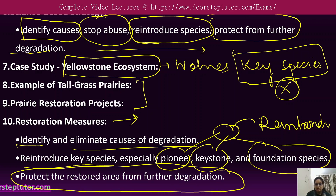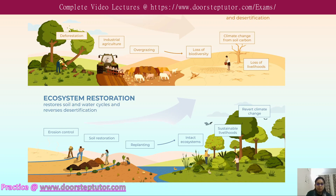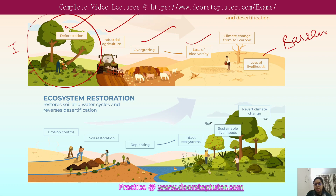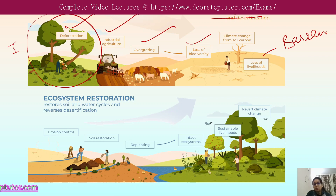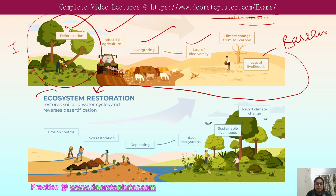As shown in the diagram, a large green ecosystem exists initially. Through deforestation, industrial activity, and overgrazing, there is loss of biodiversity and the ecosystem becomes barren. Bad land management leads to drought, soil erosion, and desertification. Ecosystem restoration can restore the soil and water cycle, and reverse desertification.